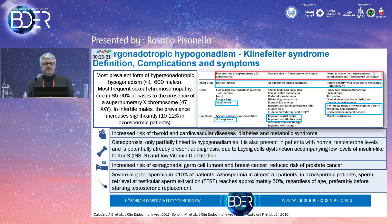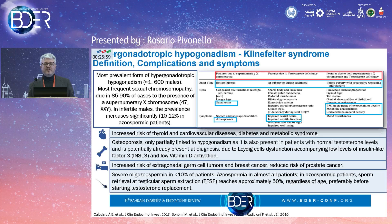Klinefelter syndrome is the most prevalent form of hypergonadotropic hypogonadism and the most frequent sexual chromosomopathy, due in the great majority of cases to the presence of an additional X chromosome. In infertile males, this prevalence increases significantly, up to 10–12% in patients with azoospermia.